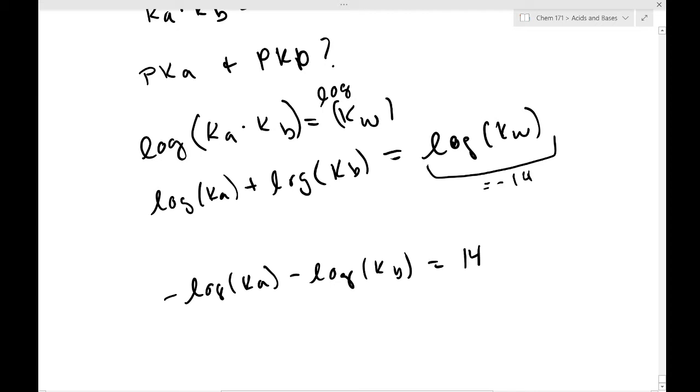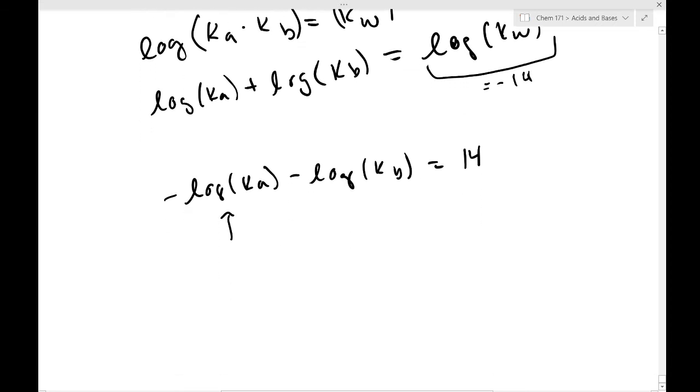So then I have negative log of Ka minus negative log of Kb is equal to 14. I distributed the negative, so there's no negative there. This side is pKa, right? This side is pKb.